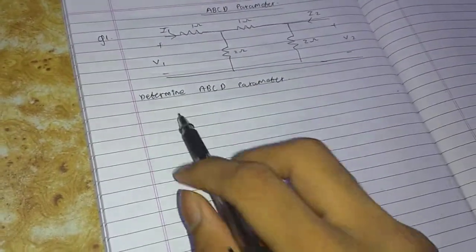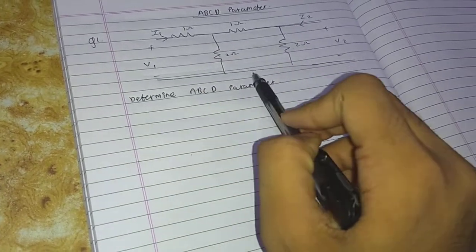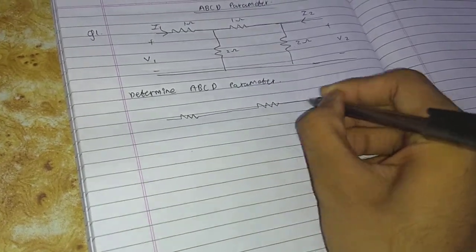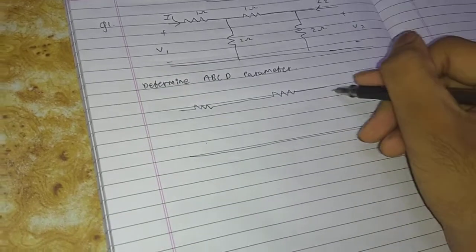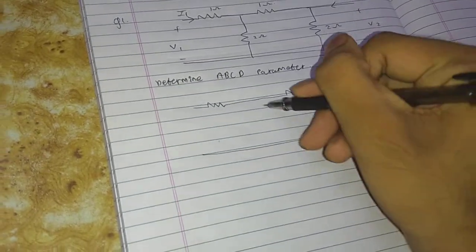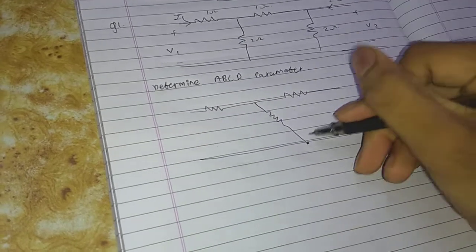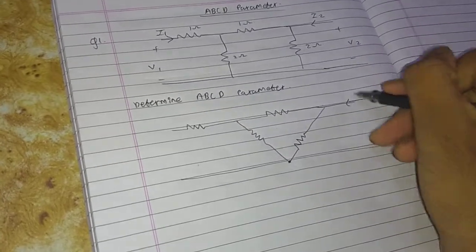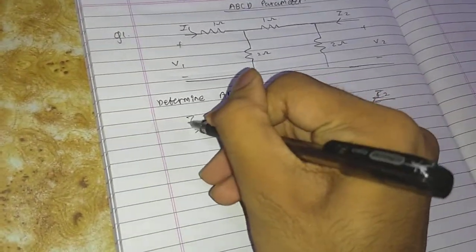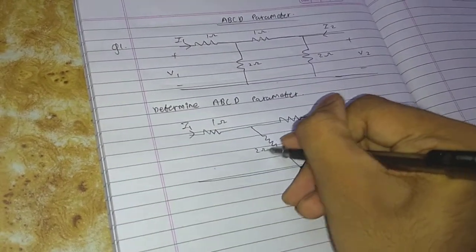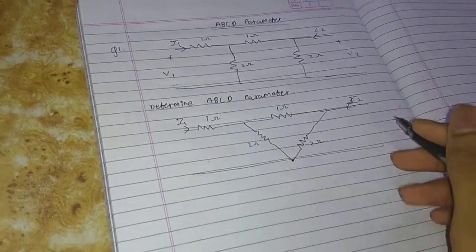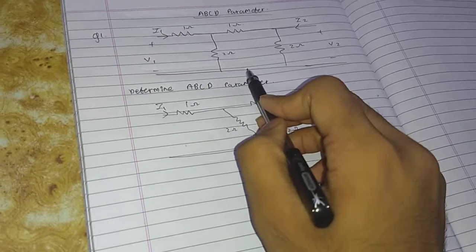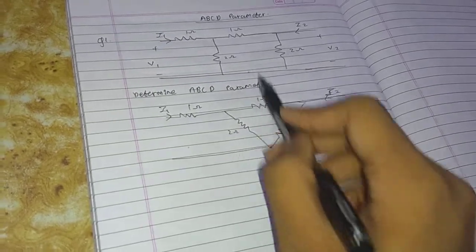As you can see, this network — I have to determine the ABCD parameter. You can draw it in delta fashion. So we will draw this part like this — it is a delta. Here is I2, here is I1, this is 1 ohm, this is 2 ohm, 1 ohm and 2 ohm resistor. I have connected these two terminals over here and we got a delta.